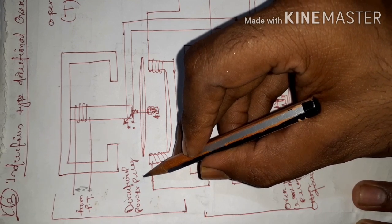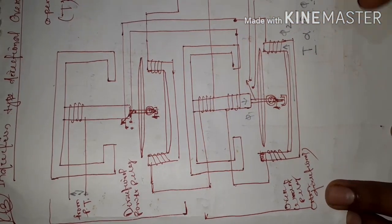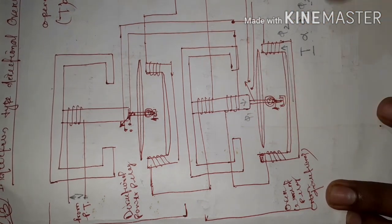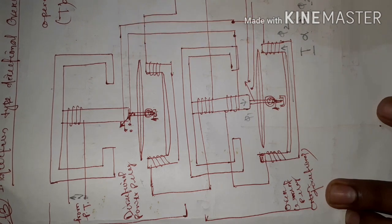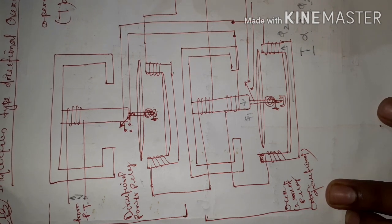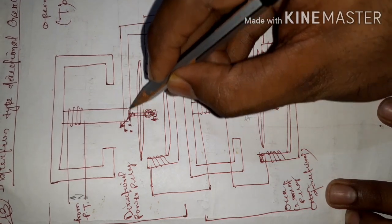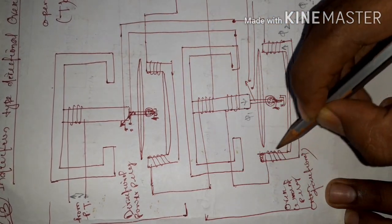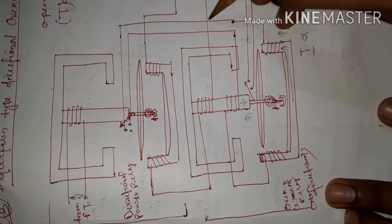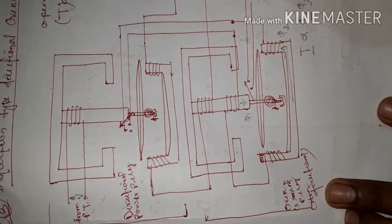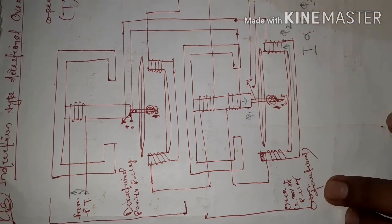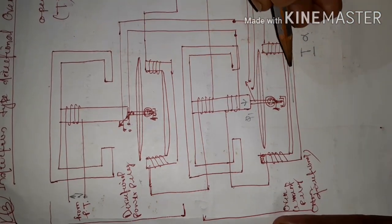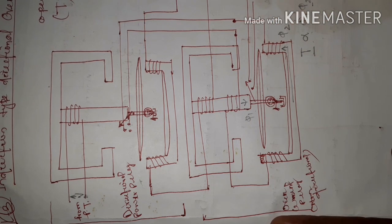Under fault condition the directional power relay operates first and sends a signal to the non-directional overcurrent relay present below it.